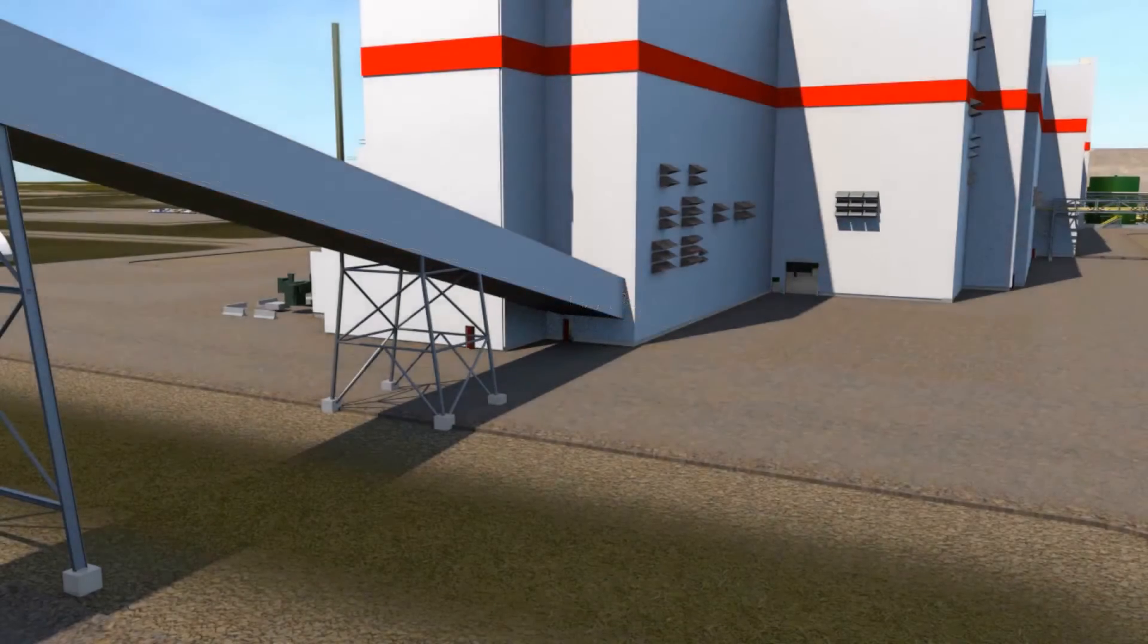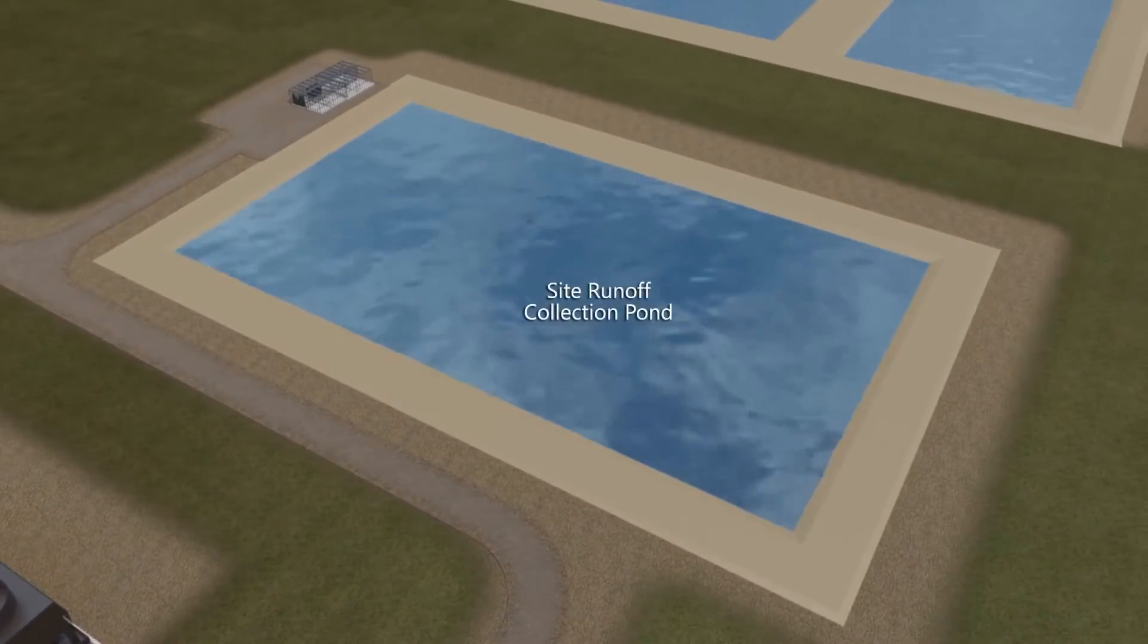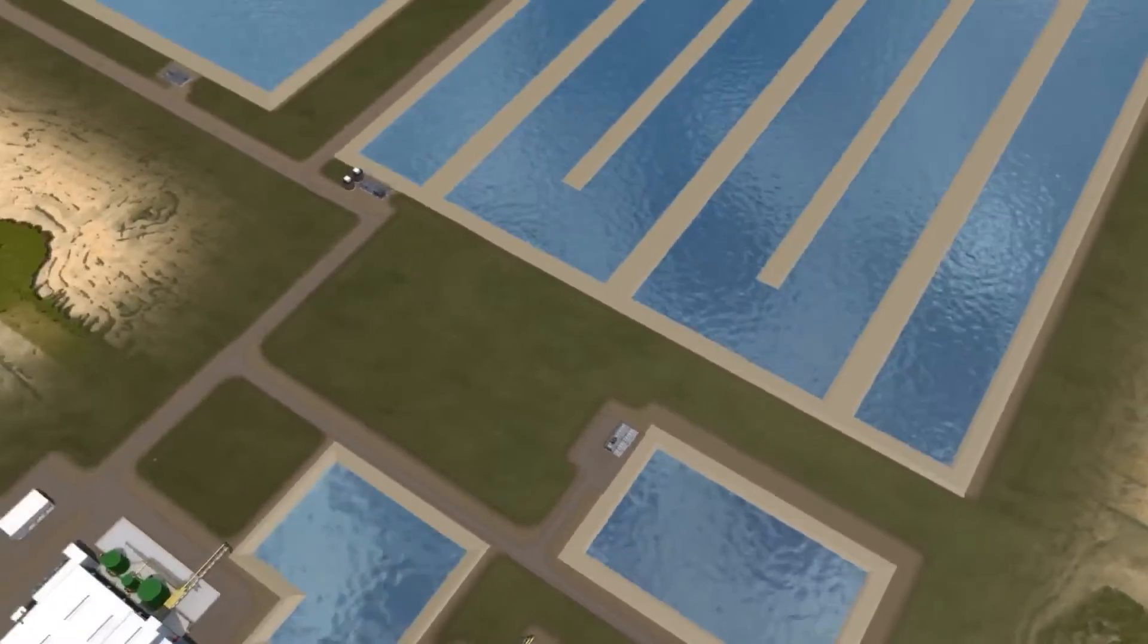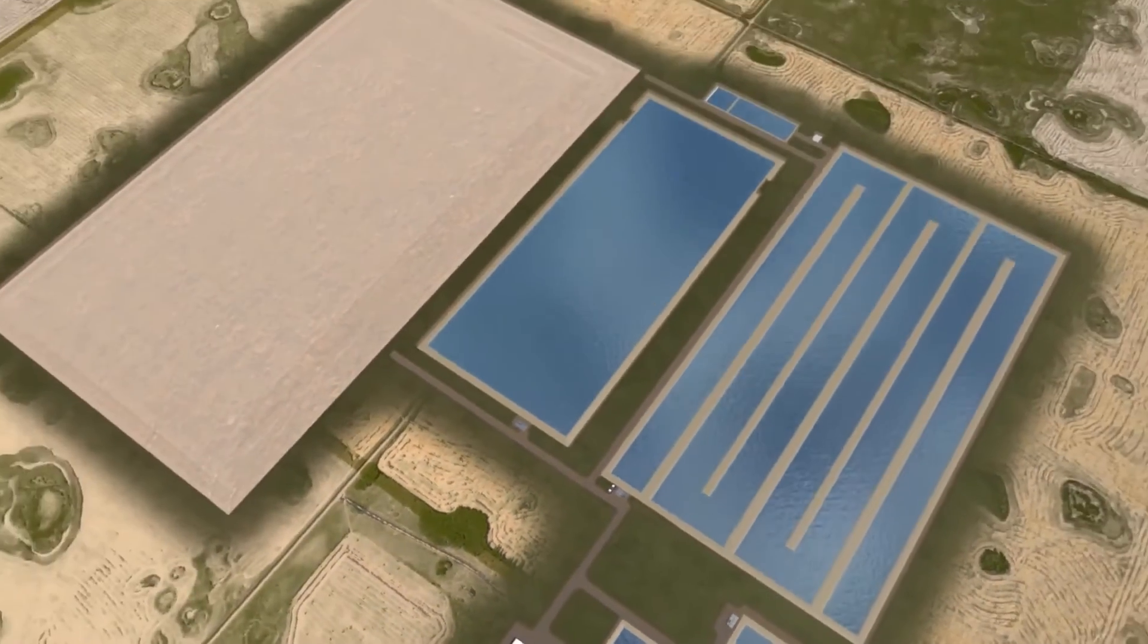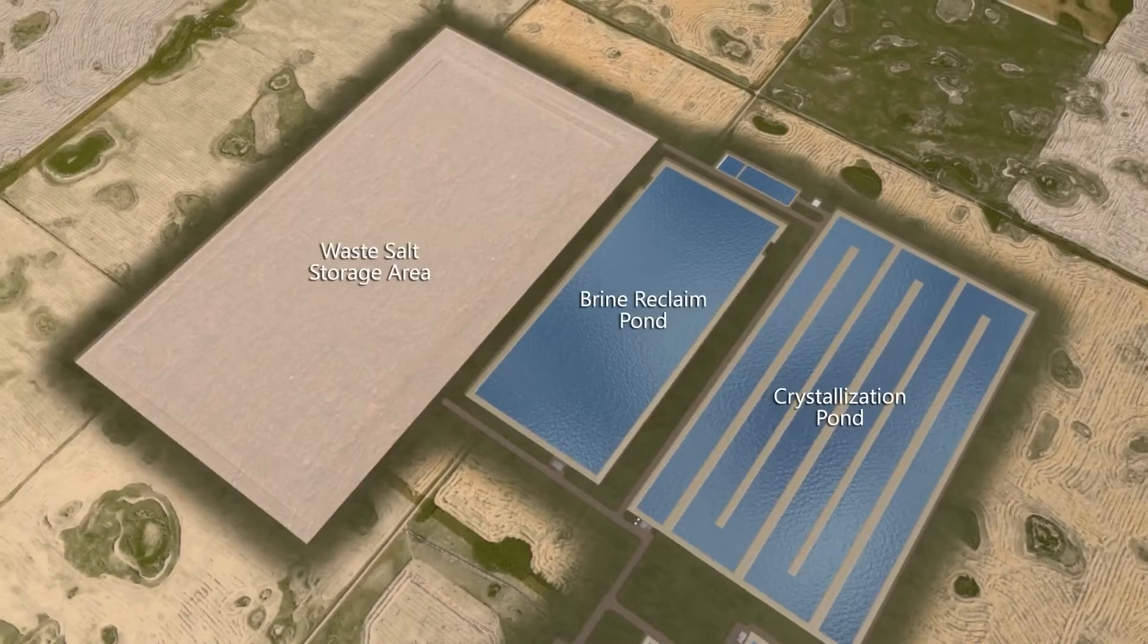The site runoff collection pond gathers the rain that falls on the site and other surface drainage. The water from this pond is then used in the process, reducing the amount of water that has to be supplied to site. The salt brought to surface in the brine and separated from the potash in processing is stored on surface.